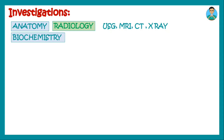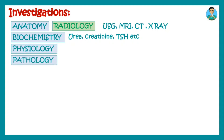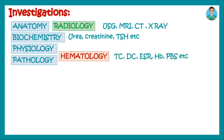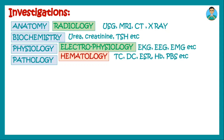Biochemistry deals with testing chemicals in body fluids — like urea, creatinine, thyroid stimulating hormone, and blood glucose. Physiology and pathology share certain investigations, particularly hematological ones. Hematology includes TC, DC, ESR, hemoglobin, peripheral blood smear, and all other components of a complete blood count. Physiology also has its own area called electrophysiology, which deals with electrical investigations such as ECG, electroencephalogram, and electromyogram.